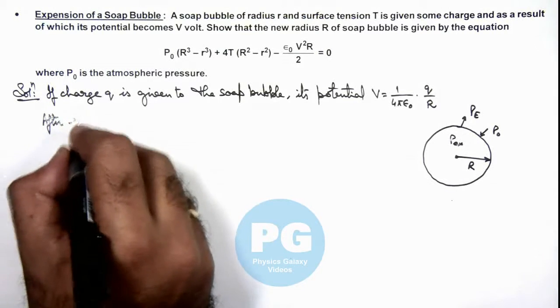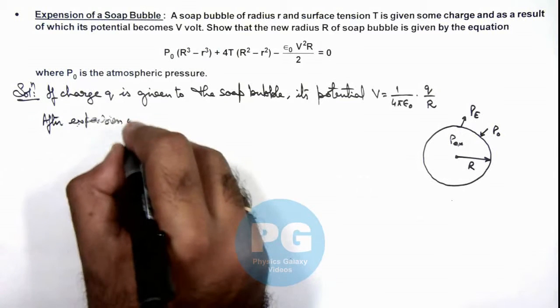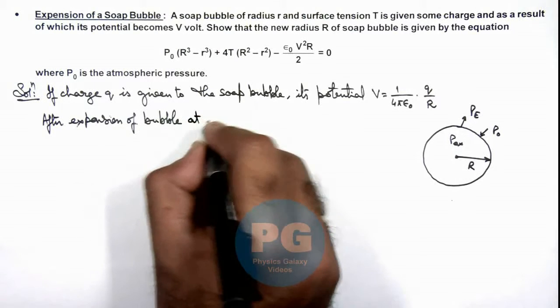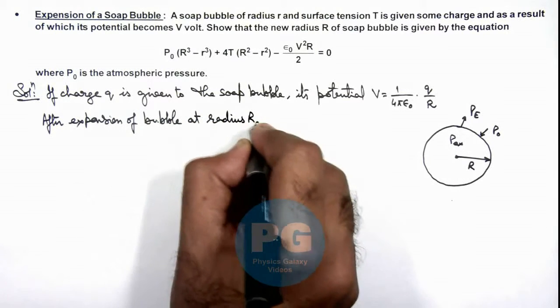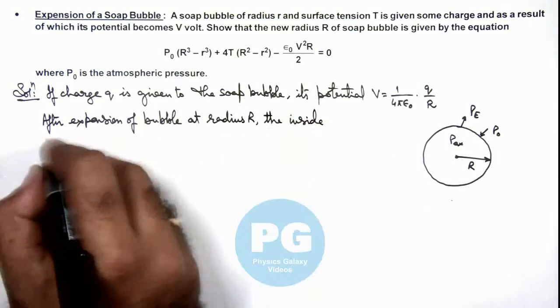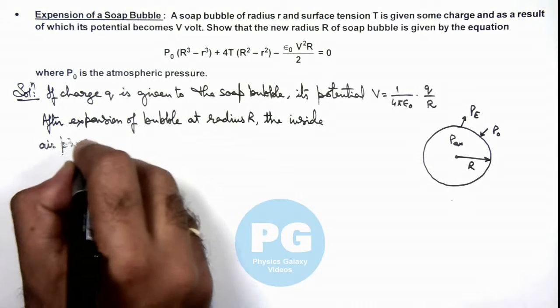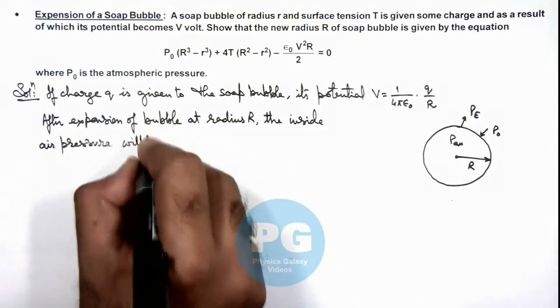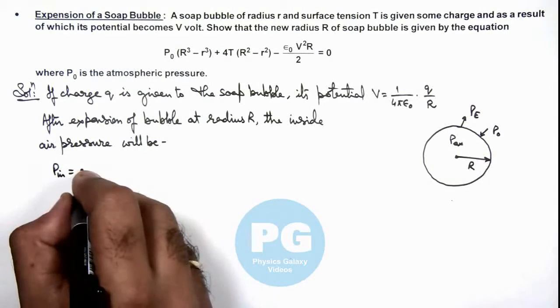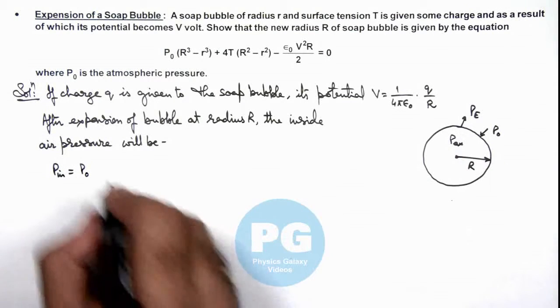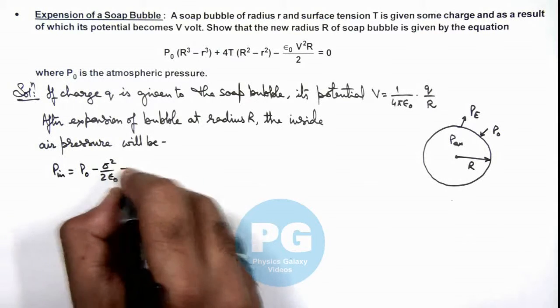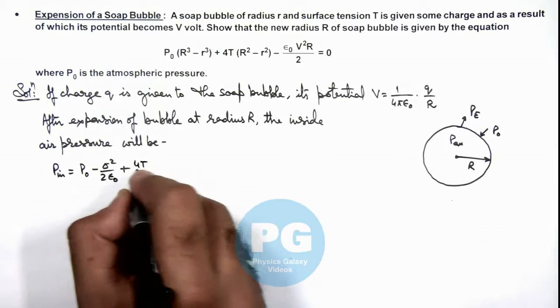So here we can write, after expansion of bubble at radius capital R, the inside air pressure will be: inside air pressure equals outside pressure P₀, which is opposed by the electric pressure given as σ²/2ε₀, plus the excess pressure acting is 4T/R.